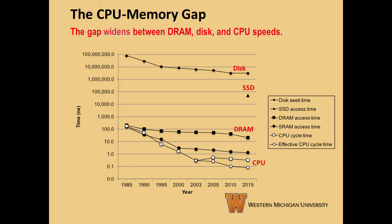This graph shows the differences in speed between the various types of memory we've talked about and CPU cycle time. As you can see, the gap just keeps getting wider over time, so what can we do to use the memory technologies we have in the most effective ways? We'll talk about some answers to that question in the next few videos. In the next video we'll talk about section 2 of chapter 6, covering locality.